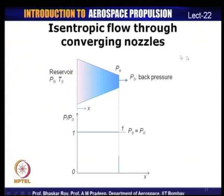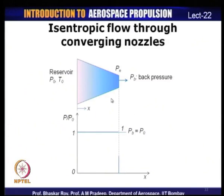In the first scenario, back pressure equals reservoir pressure — no flow takes place and the pressure ratio is constant. As we reduce back pressure, but it is still greater than critical pressure, there is a decrease in the pressure ratio P/P₀ along the nozzle.